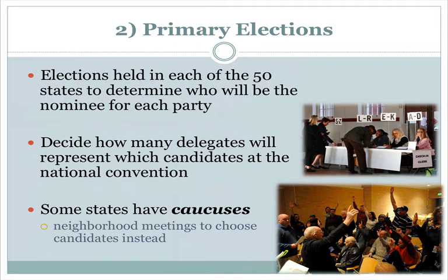Some states have what we call caucuses, where people don't go in and vote for the person they want. They go into kind of town meetings or neighborhood meetings, and they get together and discuss which candidate they want to represent them. These caucuses then declare they want person X to represent their party, and the Republicans may do the same in a state that uses caucuses rather than primary elections.